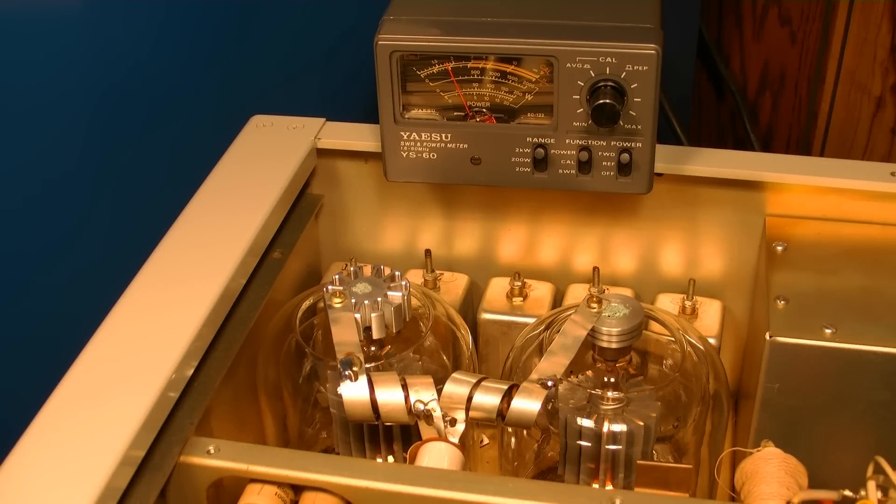As you can see we have our amp keyed and putting out 200 watts of power. At this power level the plate pin on the tube on the right hand side with the original iMac plate cap on it is going to melt the temperature indicating crayon turning it dark green.